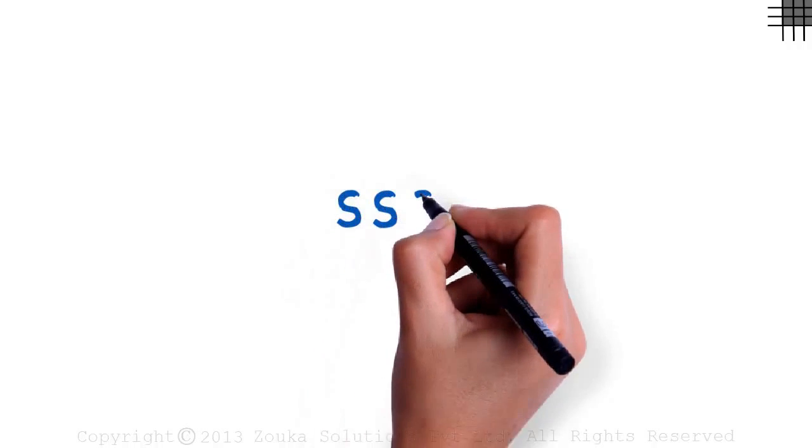In the previous video, we understood the triple S congruence condition. Let's remove the S in between and understand the SAS condition for congruency.